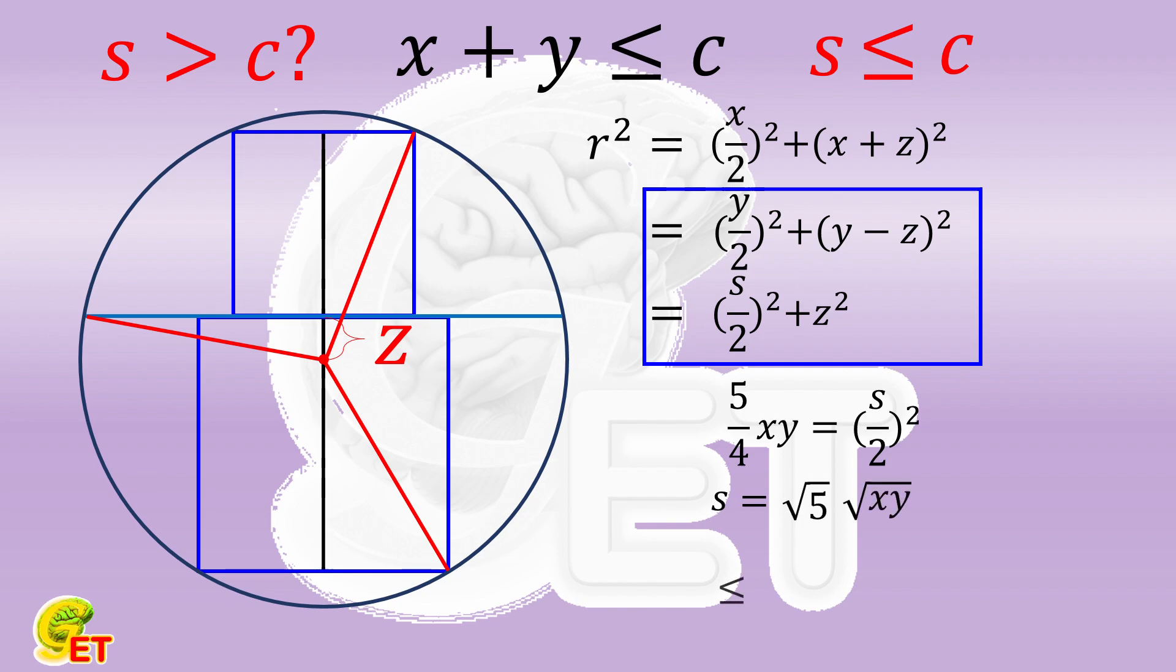Then it cannot be bigger than the square root of 5 times the arithmetic mean of x and y. And indeed they are equal when x equals y.